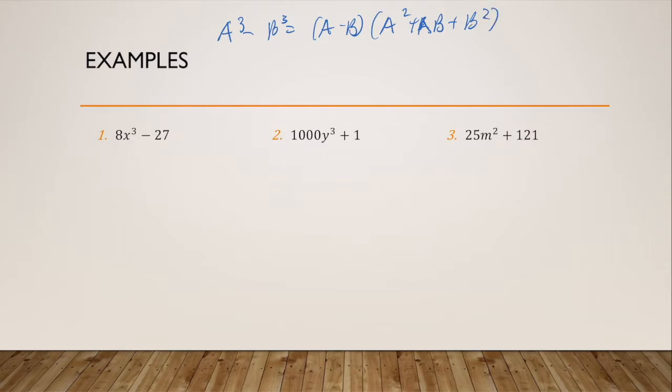And then for the sum, I have A³ plus B³ is A plus B times A² minus AB plus B². So for problem one, my A is going to be 2X, my B is going to be three. And then I just plug it in.